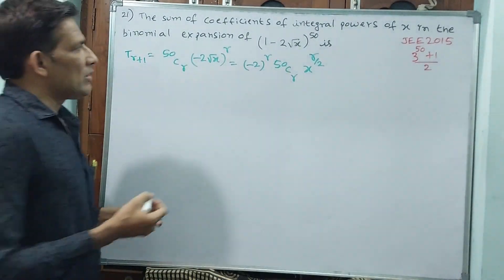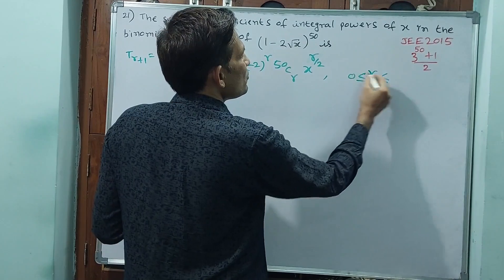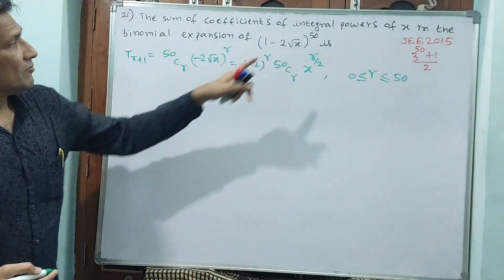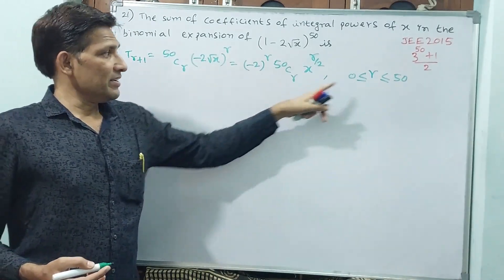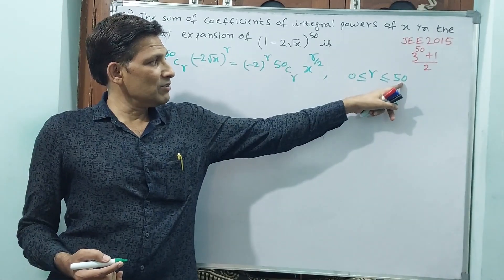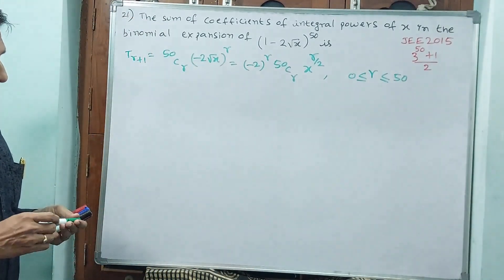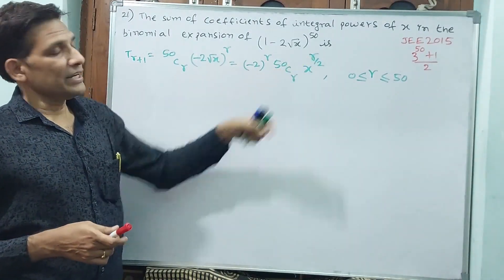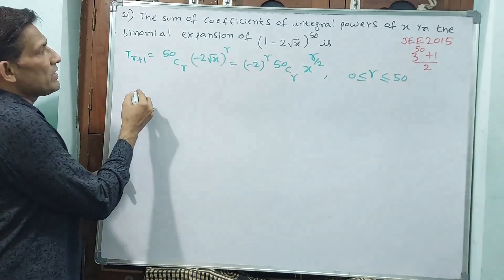r takes values from 0 to 50, giving us 50C0 through 50C50. But not all values of r give x an integral power. We need x to have an integral power, so we check when r/2 is an integer.